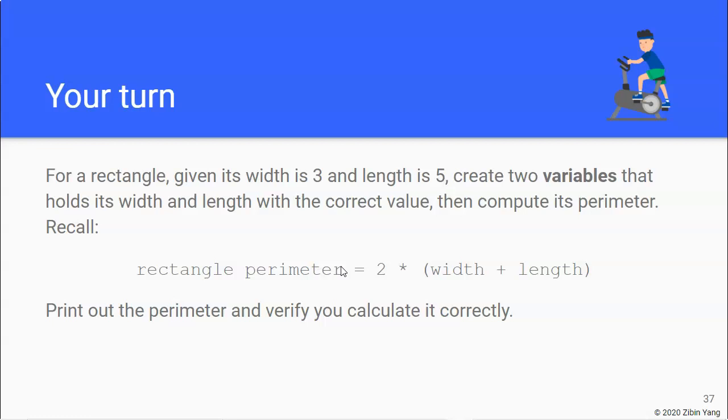And you should know, hopefully, that the perimeter of a rectangle is two times the sum of its width and length. And of course, print out the perimeter to verify that you've actually done this correctly. So pause the video and give this exercise a try.